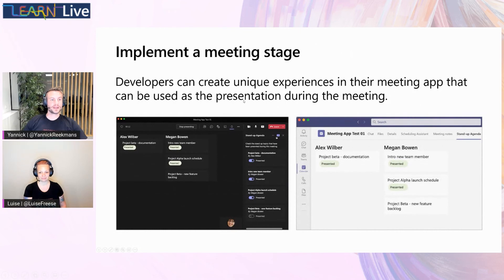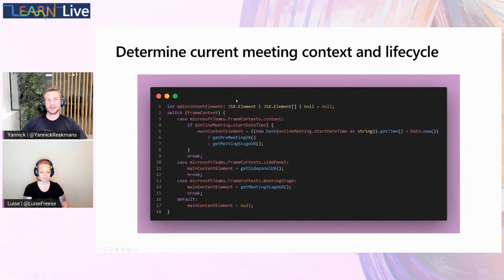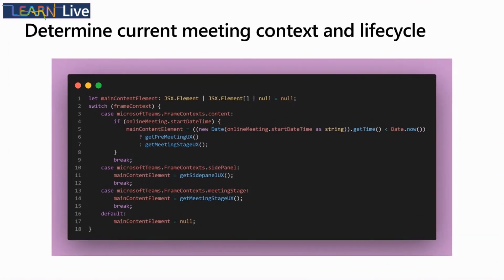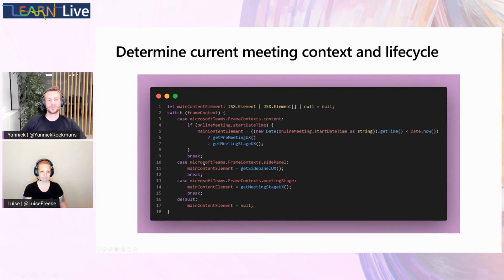To determine current meeting context and lifecycle, this is the code we will use. When we use the Teams JavaScript SDK and get the context, you can check whether you're in the side panel UX, whether you're in the meeting stage and load the meeting stage UX, or whether you're in content. This is where we check using start date time or end date time to see if we go for the pre-meeting UX or the meeting stage UX. With the meeting stage UX, no interaction was possible anyway, so we can easily use this as the post-meeting experience as well.